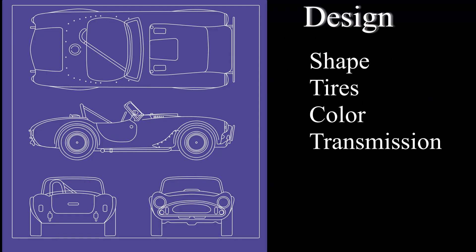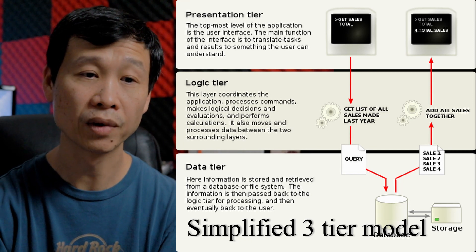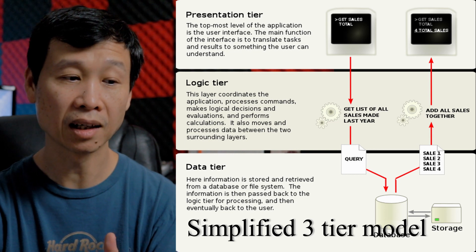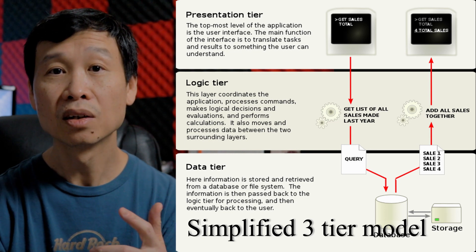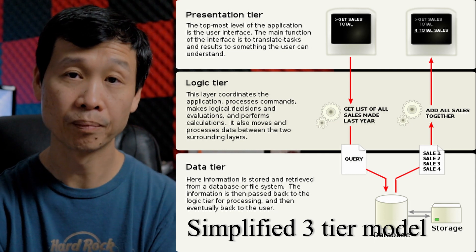For a car, how do you design it? The shape, the color, what transmission to put together, what tires to use — this is the design in order to meet our specific problem. When we look at software applications, there are multiple things to consider. There is a front end and a back end, and there is a way for us to capture and store persistent data.